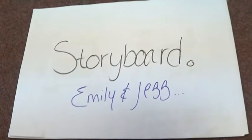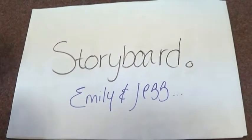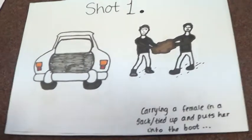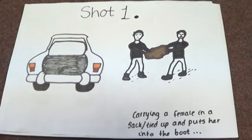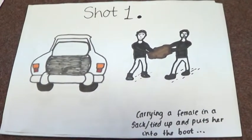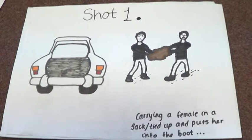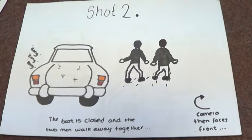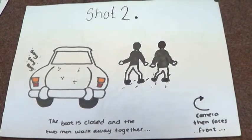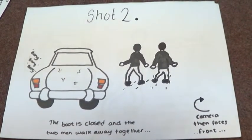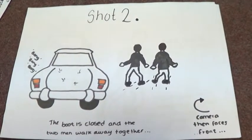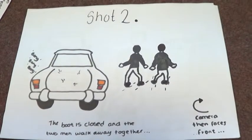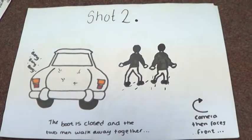This is our storyboard of what will happen in our opening scene. Shot 1 shows the very beginning, which is of a currently unknown female being put into the boot of a car by two men. Shot 2 shows the female has been put into the boot screaming whilst the two men walk away together. The shot becomes an 180 degree rule, from watching them walking away from behind to then following round until they're walking at the camera.